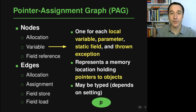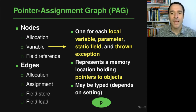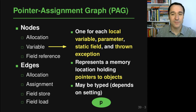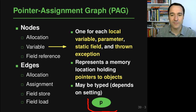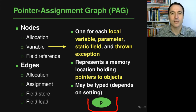The second kind of node are variable nodes, which can represent local variables but also parameters, static fields, and thrown exceptions. What these variable nodes represent is a memory location holding a pointer — or maybe multiple pointers — to objects during the execution of a program. So a node representing variable p will represent all the pointers to objects that this variable may ever hold. Depending on the setting used with the SPARK framework, these nodes may be typed or not.